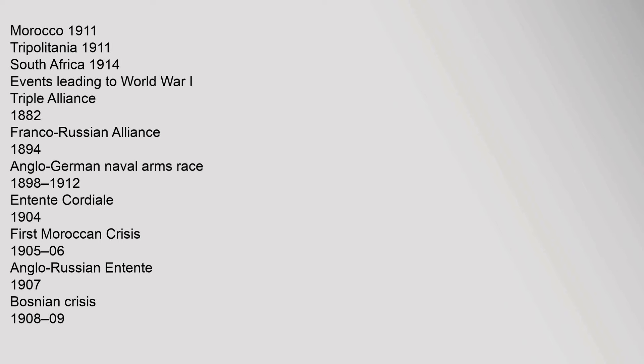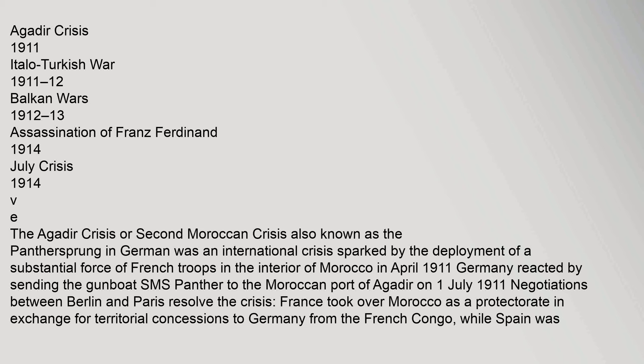Events leading to World War I: Triple Alliance 1882, Franco-Russian Alliance 1894, Anglo-German naval arms race 1898–1912, Entente Cordiale 1904, First Moroccan Crisis 1905–06, Anglo-Russian Entente 1907, Bosnian Crisis 1908–09, Agadir Crisis 1911, Italo-Turkish War 1911–12, Balkan Wars 1912–13, Assassination of Franz Ferdinand 1914, July Crisis 1914.